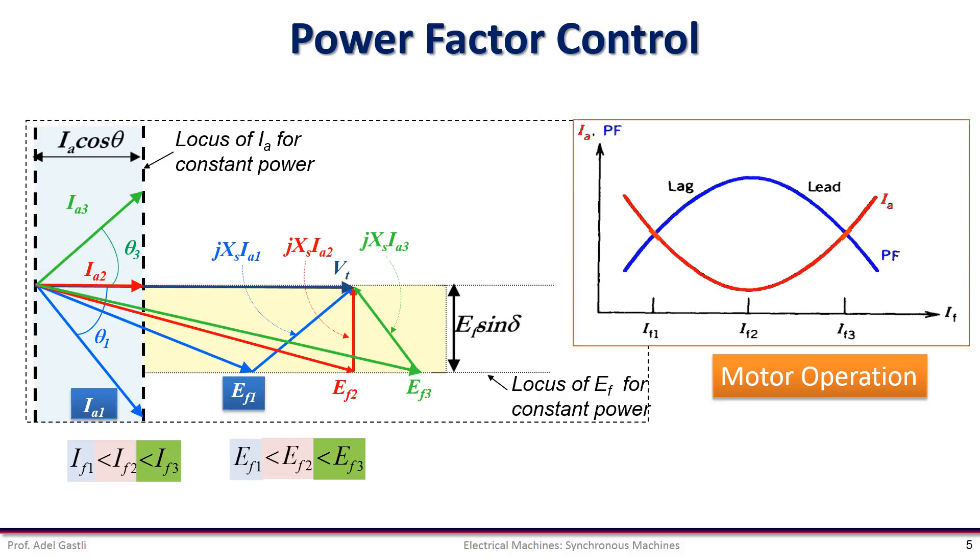This graph illustrates the variation of the armature current and power factor for constant power operation when the excitation current is varied. Notice that the minimum current, Ia2, occurs at unity power factor. We can distinguish two modes of excitations.